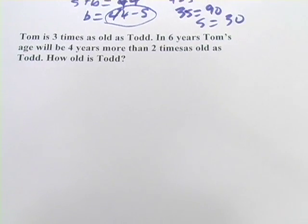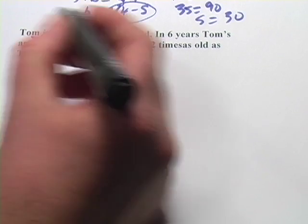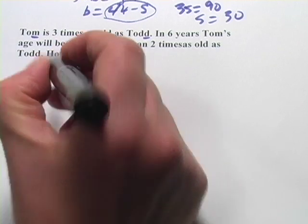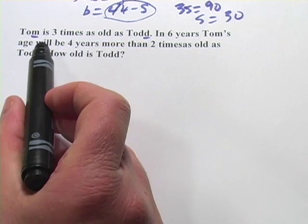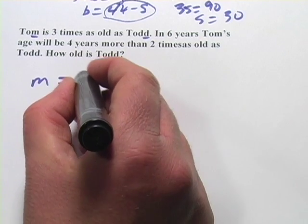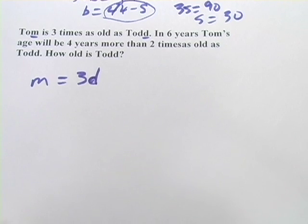Let's try one more of those. It says Tom and Todd. Oh great, they both start with T. So let's use the last letter in their names for the variables. So Tom, that's his age now, is three times as old as Todd. Okay, well that's not too hard. Todd is D, so three times that is three times D. M equals 3D.